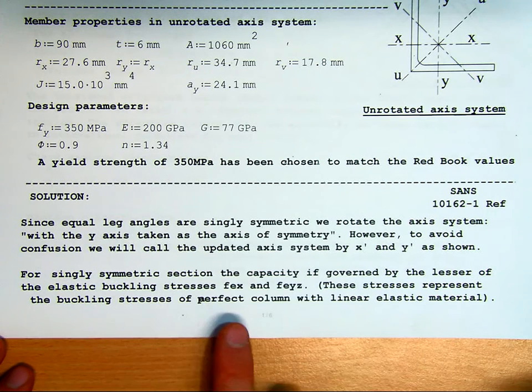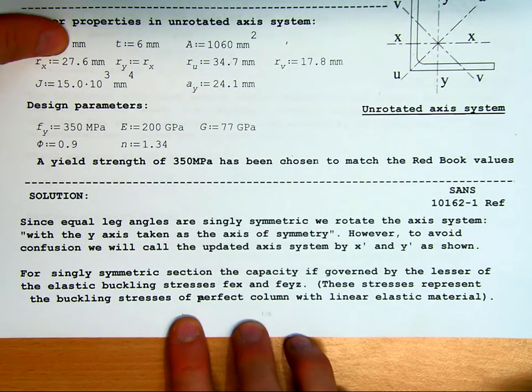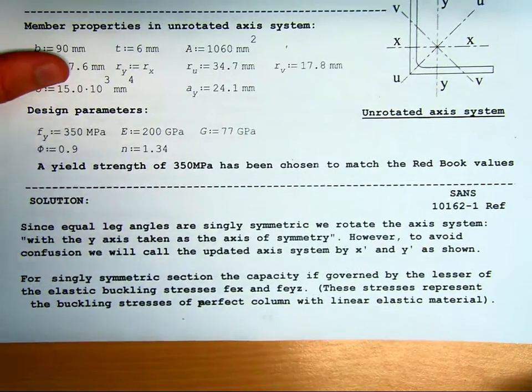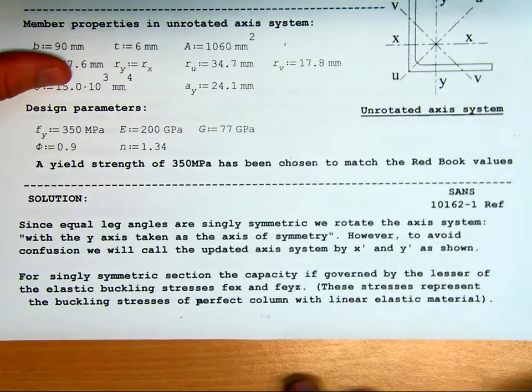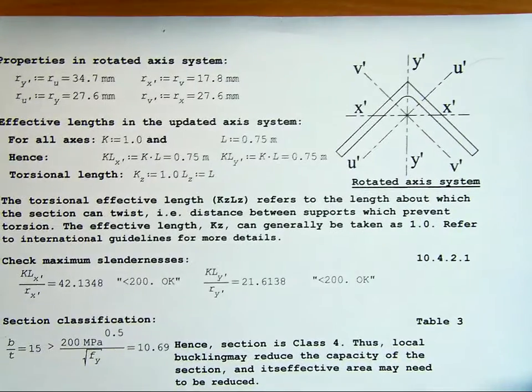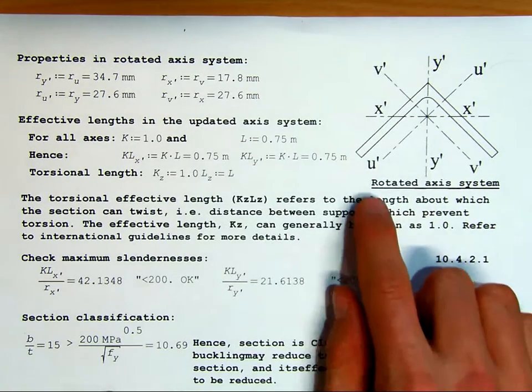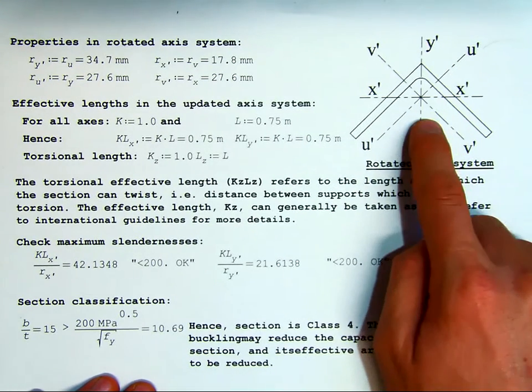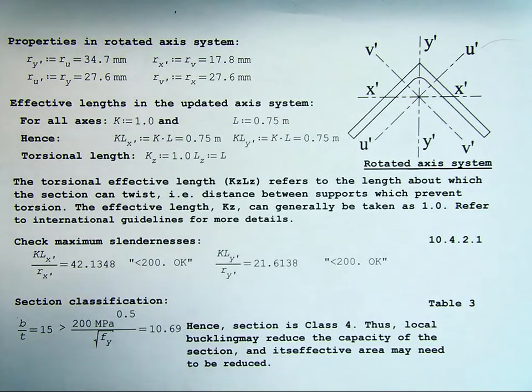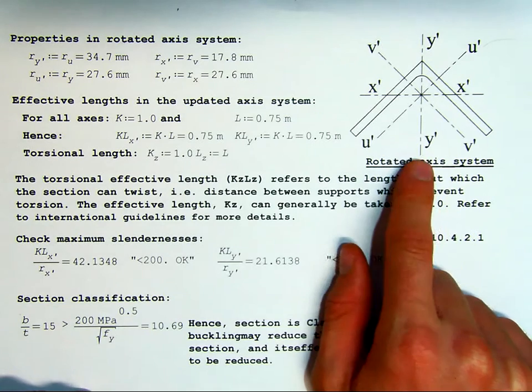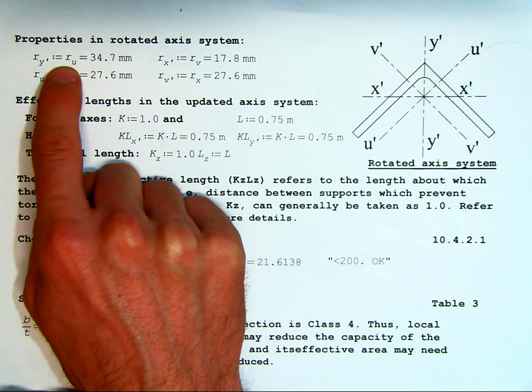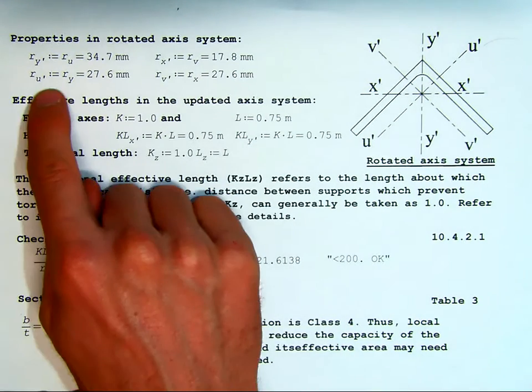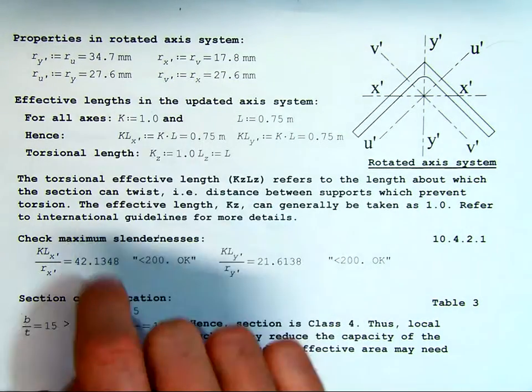For singly symmetric section, the capacity is governed by the lesser of the elastic buckling stresses, f_ex' and f_ey'z. Those stresses represent buckling of a perfect elastic column. So that would be, if you were to model this in Abaqus or Prokon or something as a perfect column, it would get to that stress and then fail. Looking at our system, this is what I've done in terms of rotating it. I've gone from previously having the x and y to an x' and y'.